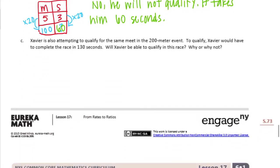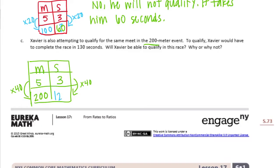Xavier is also attempting to qualify for the same meet in the 200 meter event. To qualify he would have to complete the race in 130 seconds. Will Xavier be able to qualify for this race? Why or why not? So let's do the same chart here. We have meters per second. And the ratio is still 5 to 3. This time we want to know if it's 200 meters, how long would it take him? So 5 to get to 200, this time we multiply by 40. So 3 times 40 would get us 120 seconds.